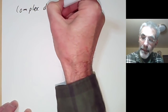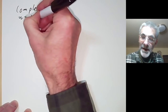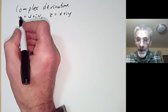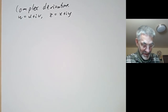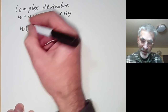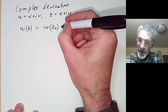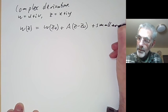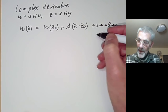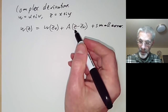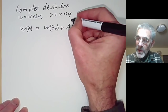So now we want to define a complex derivative. We recall that w is u plus iv and z was x plus iy. We want to take into account that we're working with the complex plane, not R². So we say w is differentiable at z zero if w(z) equals w(z zero) plus a times z minus z zero plus a small error. As usual we want the error to be less than any linear function. Here a is a complex number.